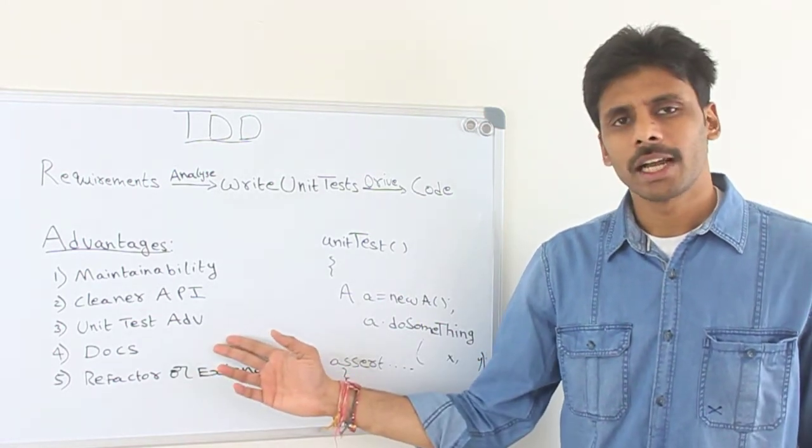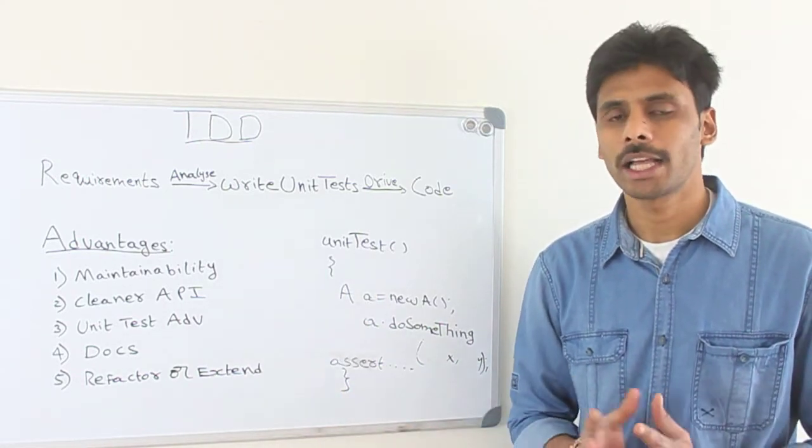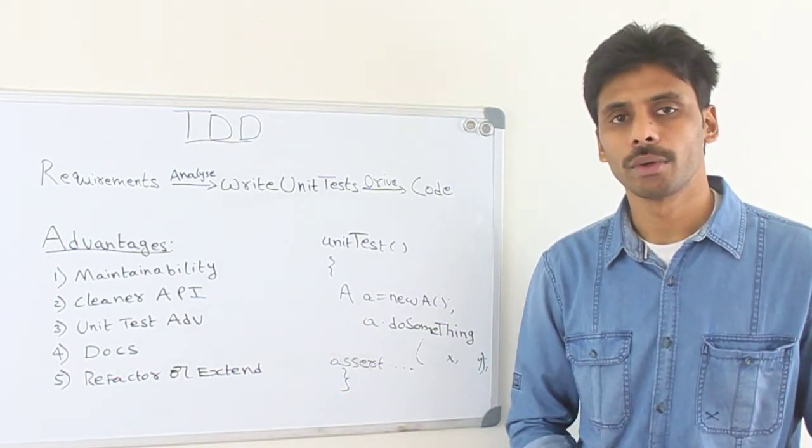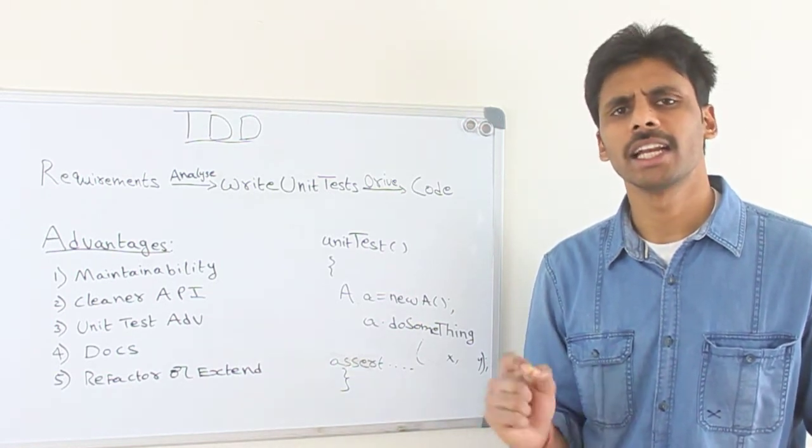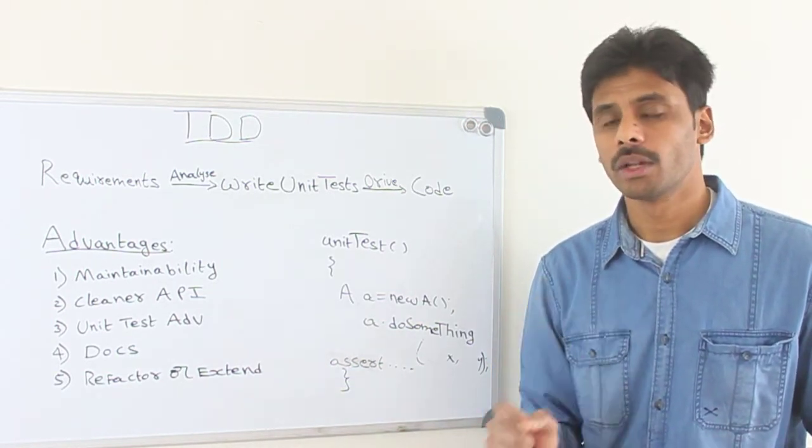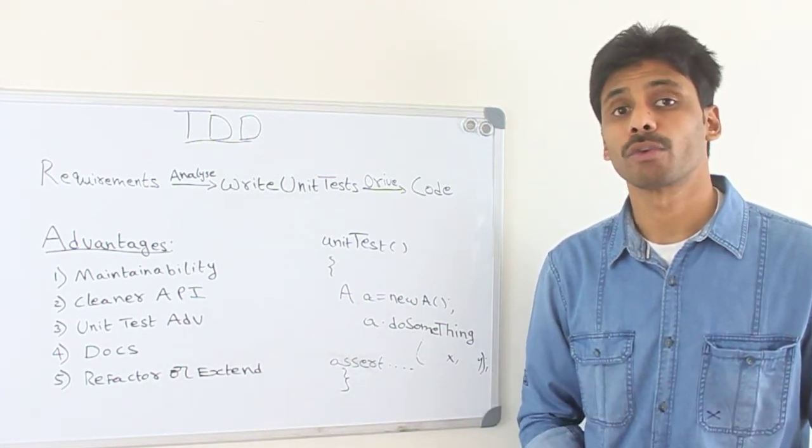And it will have all the unit tests advantage since TDD is a way of doing unit tests. Generally, as you keep writing a lot of unit tests, it will become a regression suite. And if someone makes a tiny little change, you can know if something breaks right then and there, if you make these unit tests a part of your build.